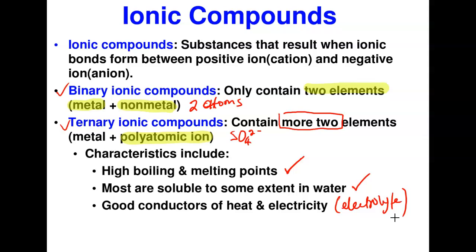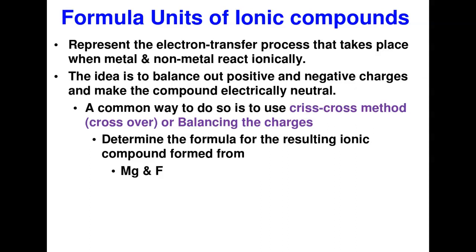Now let's start naming and writing formulas of ionic compounds. The formula unit of ionic compounds — note that ionic compounds are not covalent compounds, so we use the term 'formula unit' for their particles. The formula unit of an ionic compound represents the electron transfer process that takes place between a metal and a non-metal when they react ionically.